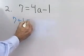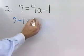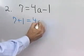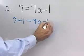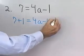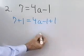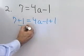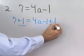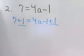7 plus 1 on the left side, and 4a minus 1 plus 1 on the right side. That's my addition property of equality — I've added 1 to both sides of the equation.